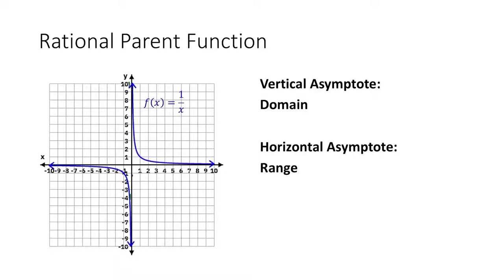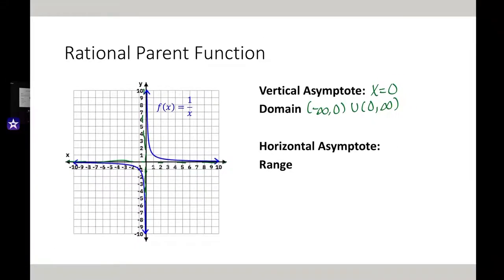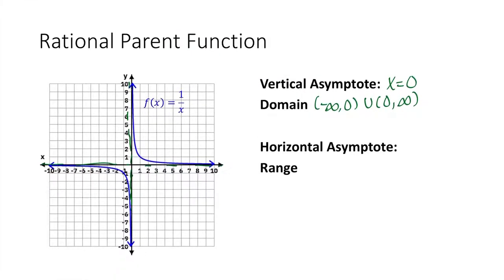You can see that it has a vertical asymptote given by the equation x equals 0. So the domain will include all real numbers from negative infinity to 0 and from 0 to infinity. It has a horizontal asymptote with the equation y equals 0.